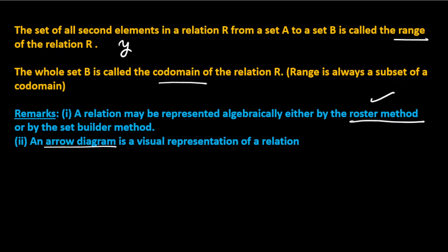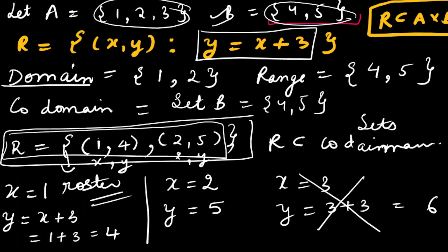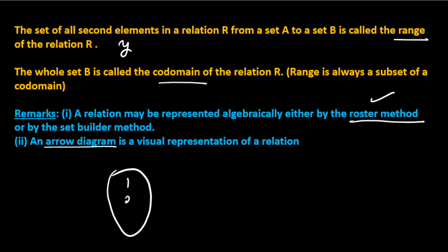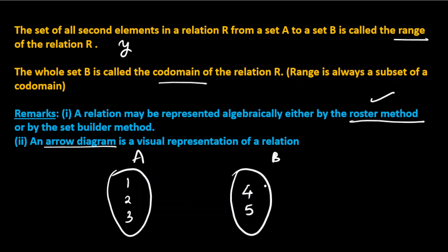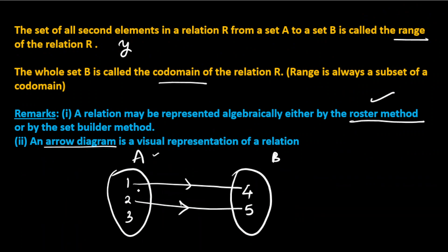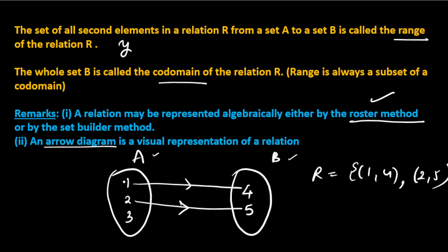There is another way to represent a relation — by an arrow diagram. For the same example with A = {1,2,3} and B = {4,5}: draw set A on the left and set B on the right. Then draw arrows — 1 goes to 4 and 2 goes to 5. This arrow diagram shows the relationship visually.